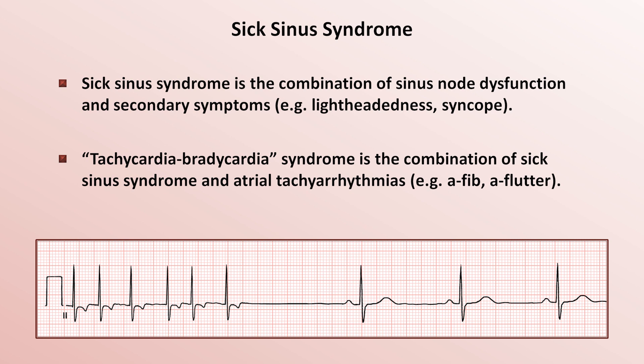Why patients can end up with both problems is not entirely clear. Certainly some of the etiologies of sick sinus syndrome, such as atherosclerosis and infiltrative cardiomyopathies, can also lead to tachyarrhythmias, but the association between sinus node dysfunction and atrial tachyarrhythmias seems too strong for there not to be a stronger connection than that. It's not even clear whether most patients develop sick sinus first and then the paroxysmal tachycardias, or vice versa.